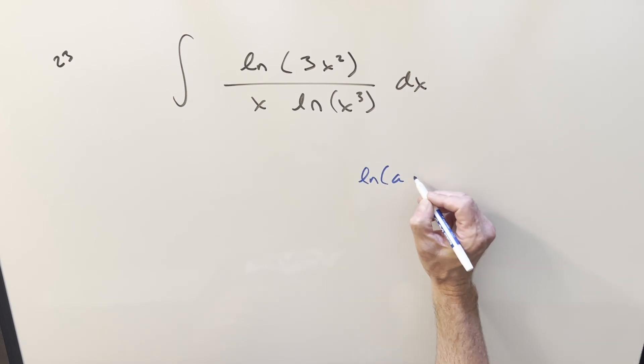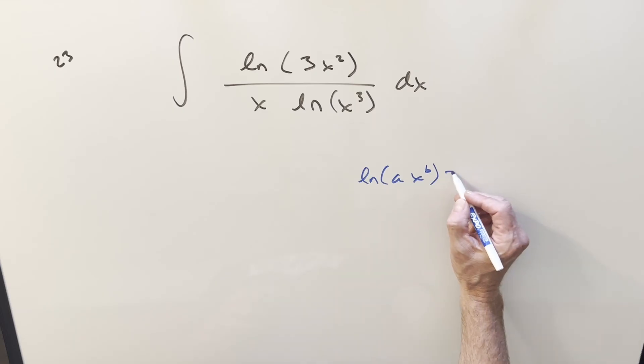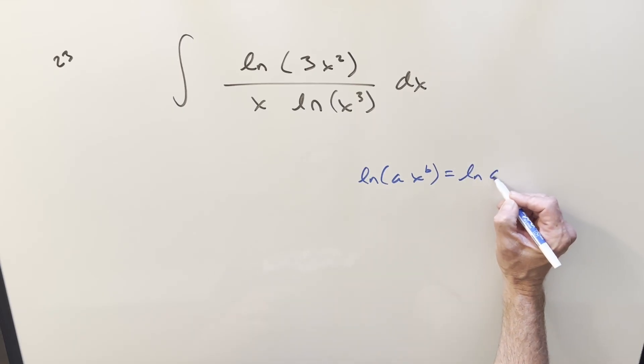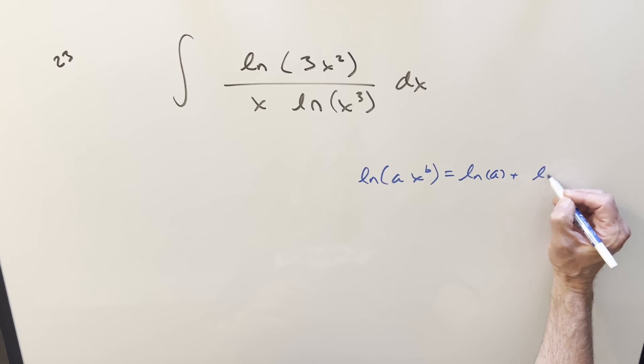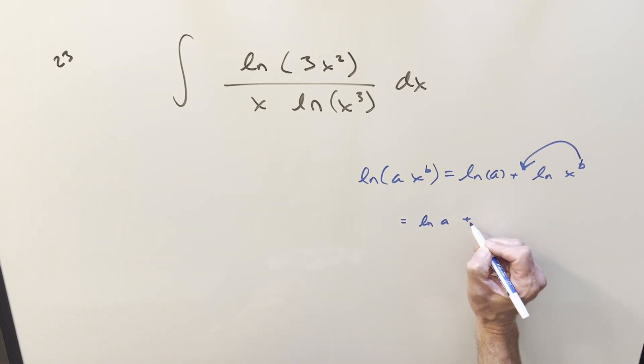If I have something like natural log of ax to the b, first of all, the multiplication can be turned into addition, so this is the same thing as natural log of a plus natural log of x to the b. But then with more properties, I can bring that exponent up front, and then we can have it as ln a plus b ln x.